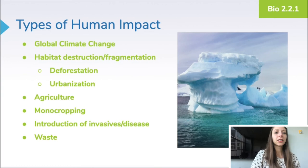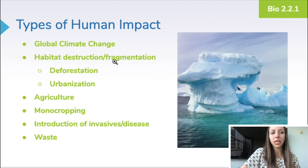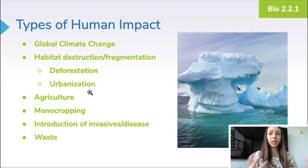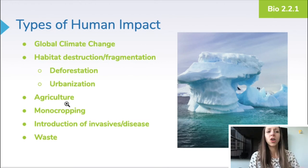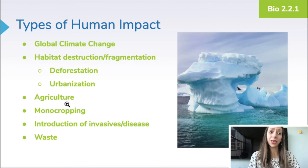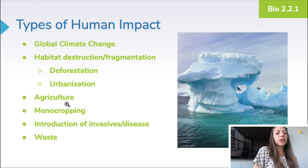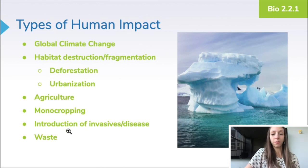Here are some other types of human impact. Global climate change or global warming. Habitat destruction and fragmentation — a huge one — includes deforestation and urbanization. Agriculture is a big one: it can fit under habitat destruction, but things like agricultural runoff or water use have a huge impact on local ecosystems. Monocropping is when one particular crop is used over a period of years without being switched out, depleting the nutrients from the ecosystem. The introduction of invasive species or disease and waste are also major concerns.